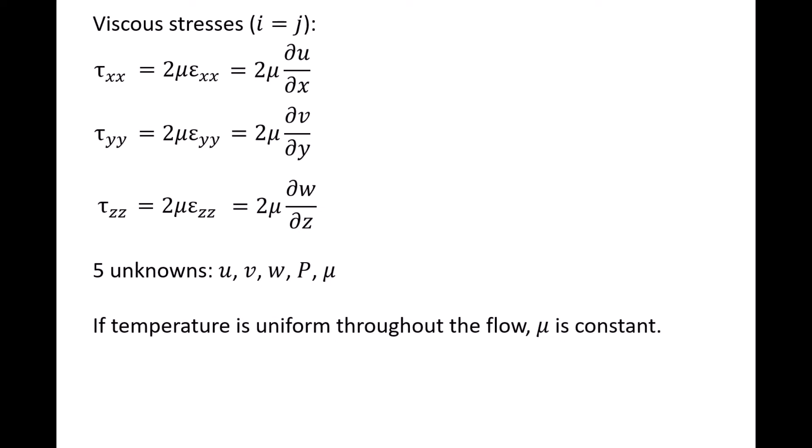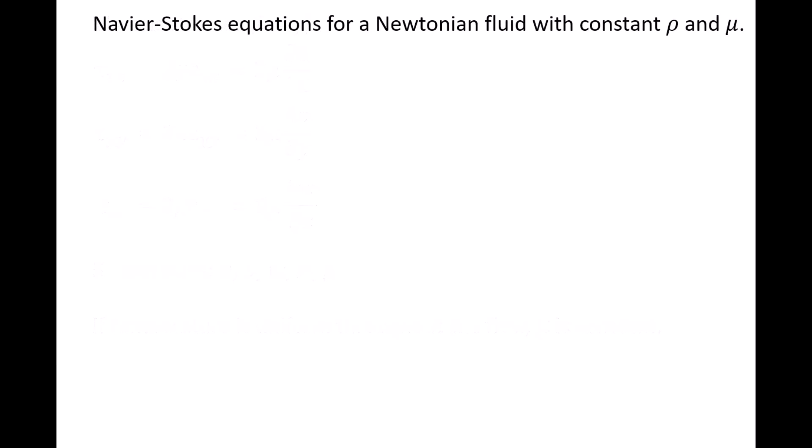So now we have expressions for all the viscous stresses in terms of velocity gradients and the viscosity mu. We are now down to five unknowns: the three velocity components u, v, and w, the pressure p, and the viscosity mu. In many applications, the temperature does not change much throughout the flow, and so the flow can be approximated as isothermal. For isothermal flows, we can approximate the viscosity as constant since viscosity is mostly impacted by temperature. If the flow is not isothermal and viscosity was variable, we would need to incorporate the differential form of the conservation of energy equation as well. After plugging in the expressions for the viscous stresses and rearranging some terms, we arrive at the Navier-Stokes equations for a Newtonian fluid with constant density and viscosity.